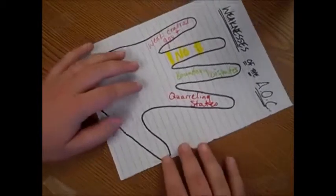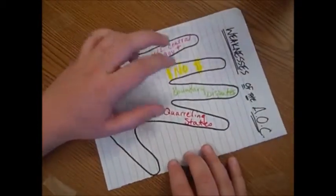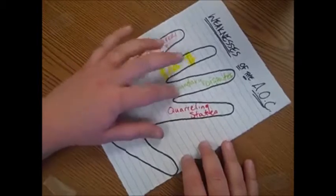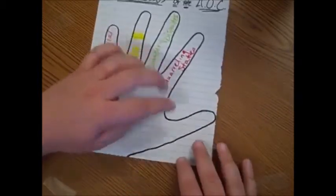And all of this, the weak central government, the no money, not being able to tax, the boundary disputes, the quarreling states, leads us to our thumb.